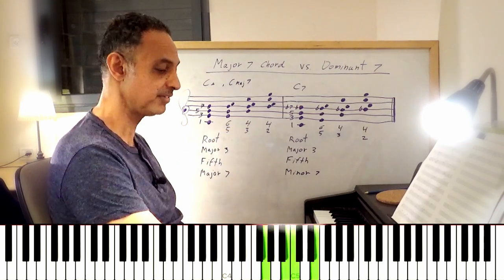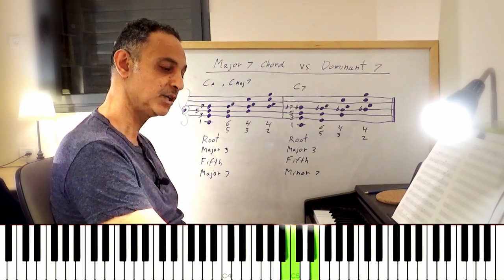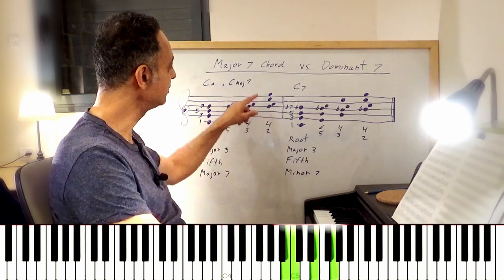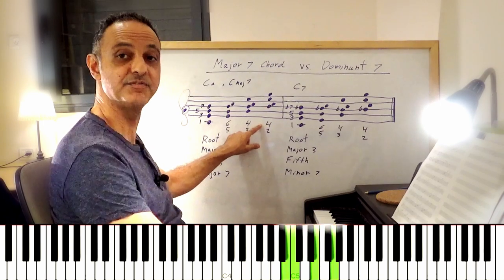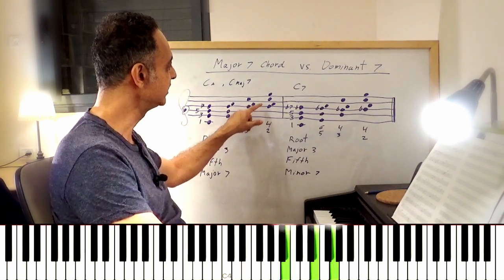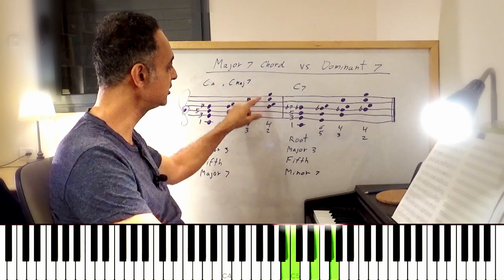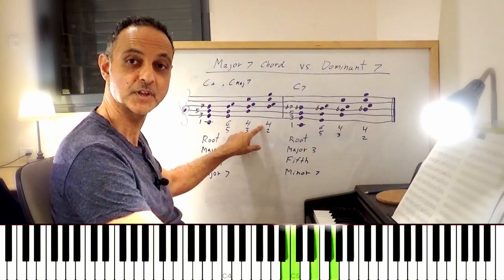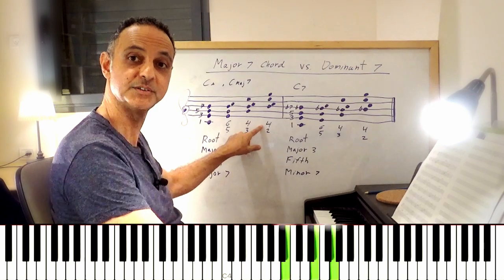And of course we can take the note G, the 5th of the chord, up — that gives us the 3rd inversion: B, C, E, and G, which is also called 4-2.